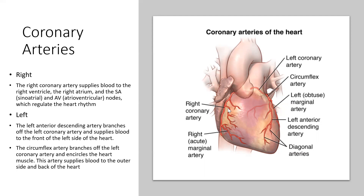Understanding which artery supplies which side of the heart can give you an idea of what happens when there's a blockage. If the right coronary artery is blocked, that's a serious problem. If the left coronary artery is blocked at its origin, no blood supply goes anywhere. Understanding where the right and left coronary arteries supply blood will give you a better understanding of where an MI has occurred and which part of the heart could be affected.